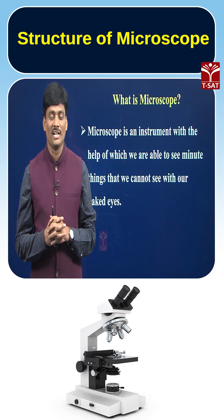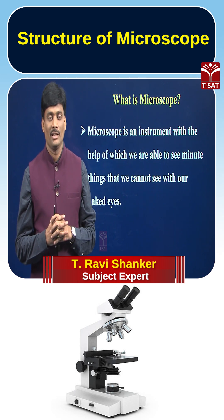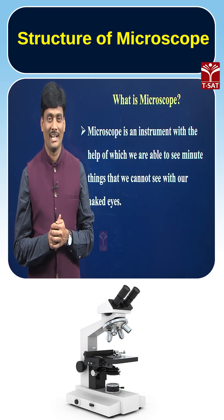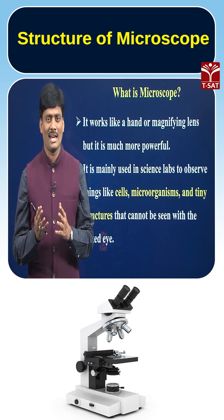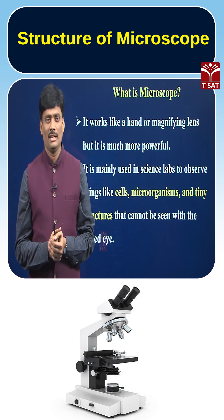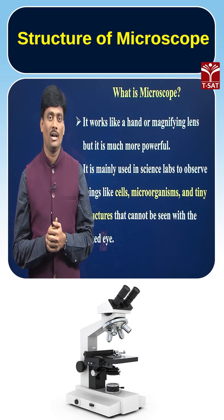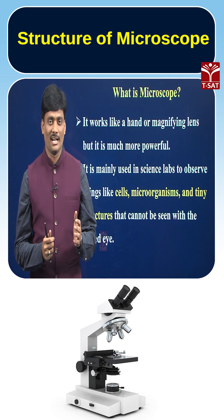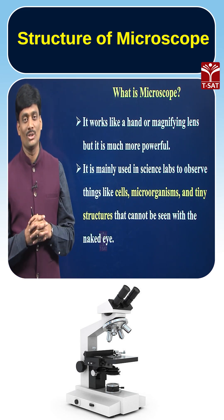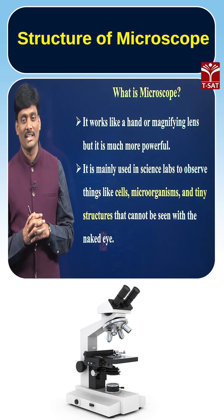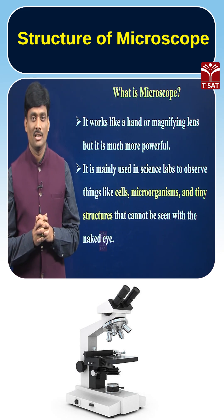A microscope is an instrument which is very useful to see very minute things that are unable to be seen with our naked eyes. A microscope is just like a hand lens or a magnifying lens, but it is much more powerful. Generally, this microscope is used in our science labs to observe cells, micro-organisms, and tiny structures which cannot be seen with normal or naked eyes.